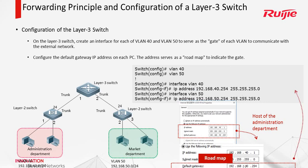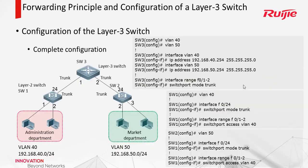We call it a root map — this is the gate. Here is the complete configuration. Besides configuring VLANs and interface VLANs, don't forget to configure the interface mode. This switch needs to forward multiple VLANs, so these two interfaces should be configured in trunk mode. If you forget this technology, please review our course.